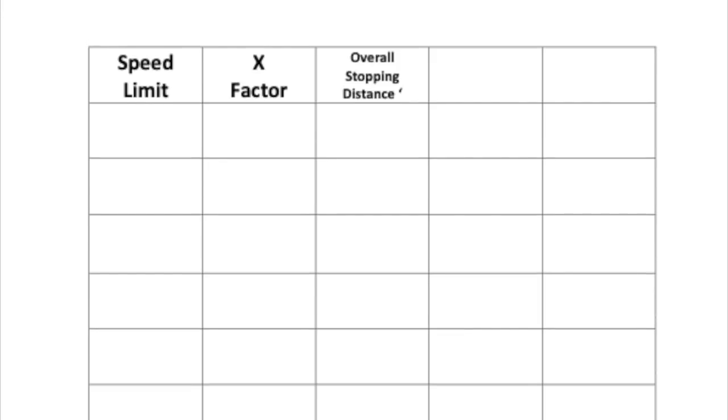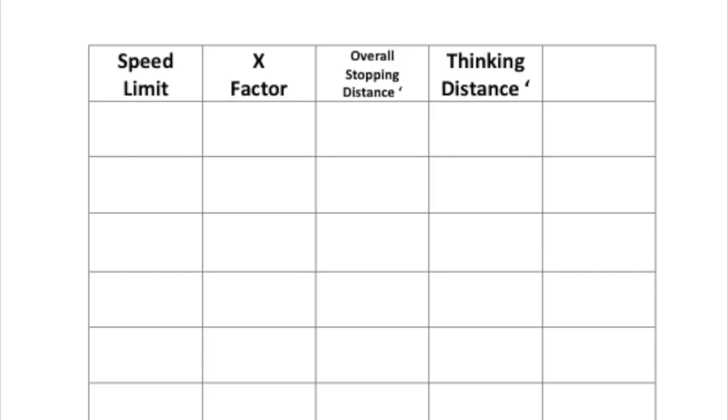So let's start by looking at the things we need to know when we calculate these numbers. Firstly, you'll need the speed limit, then we multiply it — we call this the x factor — and this gives us the overall stopping distance in feet. Next comes the thinking distance, which is always equal to the speed limit but in feet. You then subtract the thinking distance from the overall stopping distance to give you the braking distance.